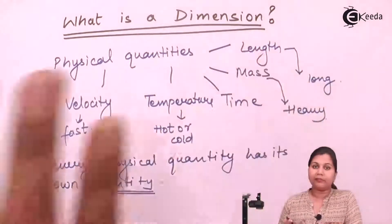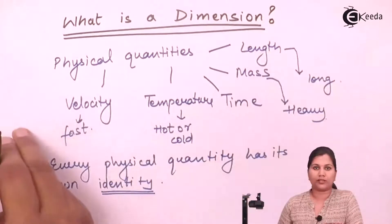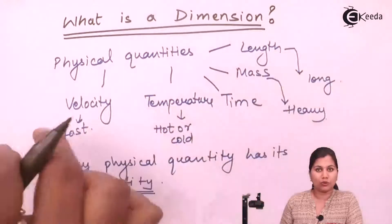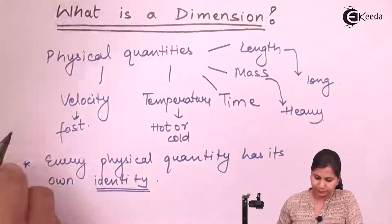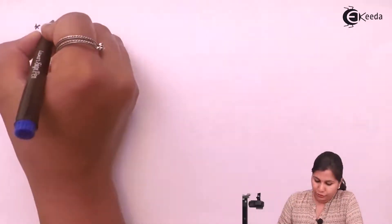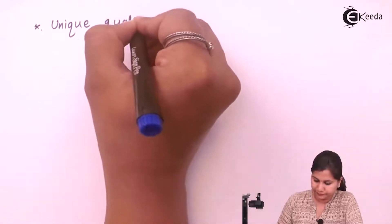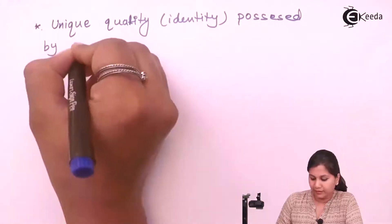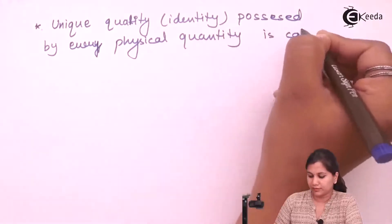This identity is the way to distinguish that physical quantity from other physical quantities. Like length measures how long an object is, which distinguishes it from velocity, which measures how fast an object is moving. So every physical quantity has its own identity. Dimension is defined as the unique quality or unique identity possessed by every physical quantity.